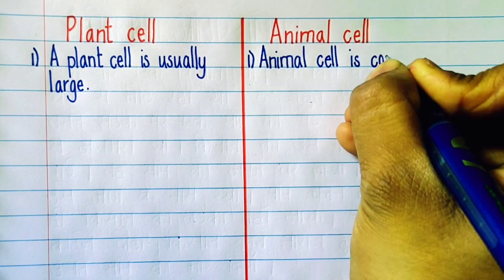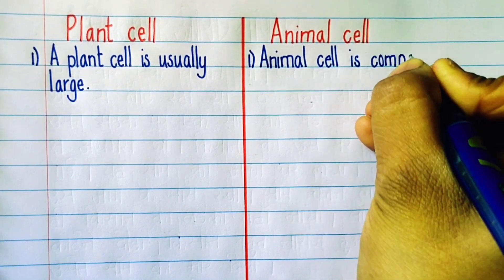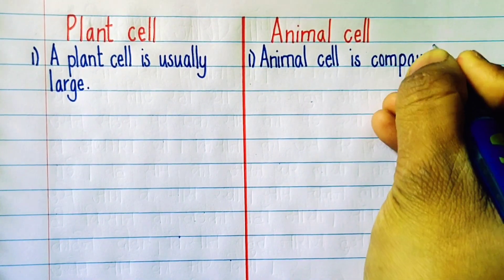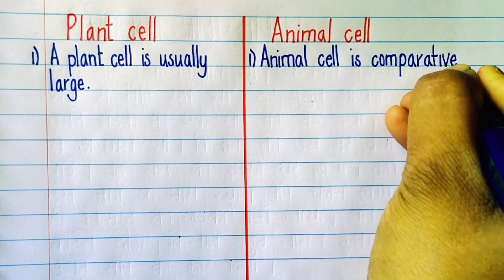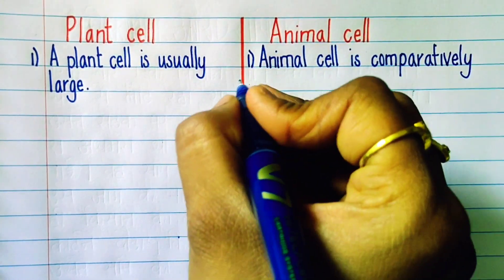First point: A plant cell is usually large. On the other hand, the animal cell is comparatively smaller in size.